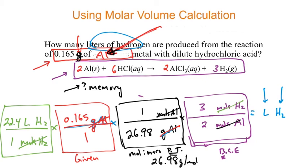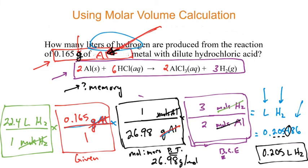With that final conversion, moles of hydrogen cancel and liters of hydrogen is my answer. Punching this into the calculator gives 0.205486 liters. Applying significant figures — three sig figs allowed — since four is less than five, the answer rounds to 0.205 liters of hydrogen.